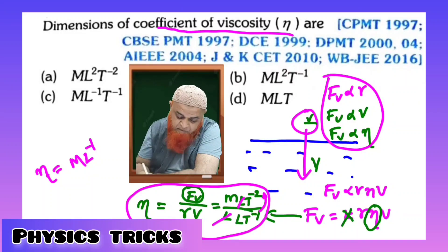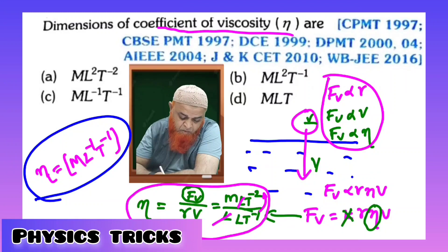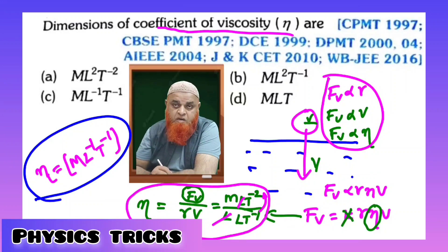And T^-1 goes to the numerator, becomes T^1. So T^-1 is left. So this is the dimensional formula of coefficient of viscosity, which is the most popular and important.